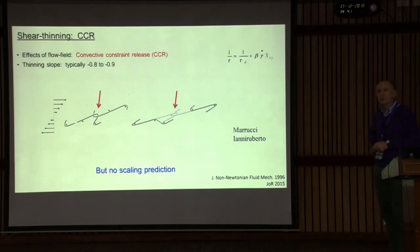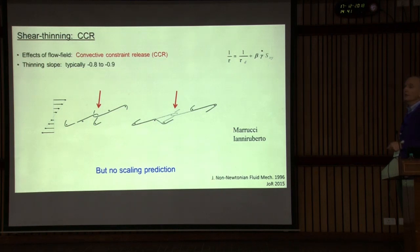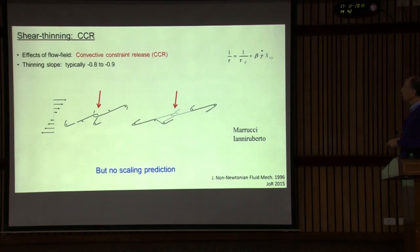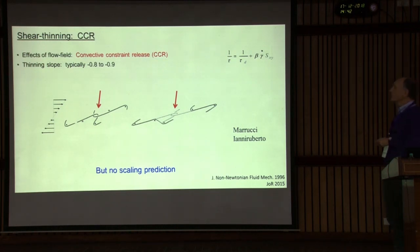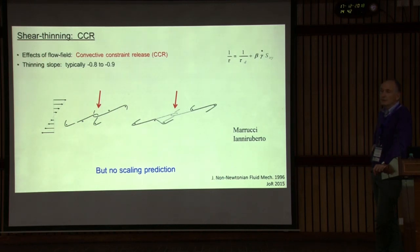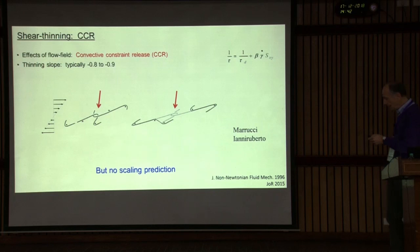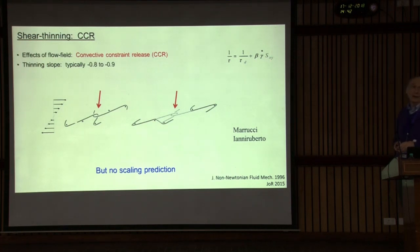The other key idea for shear thinning is convective constraint release (CCR), going back to Marrucci, and then eventually Marrucci and Ianniruberto. The idea is that within the flow, the release of an entanglement is convected, so the rate of induced relaxation is the thermal rate plus a function of the shear rate. This exponent should not be one — that's the original formulation. The idea of CCR has been proven, especially by simulations, to be correct. However, this does not provide a scaling prediction; there is a parameter, the CCR parameter, essentially the orientation tension.